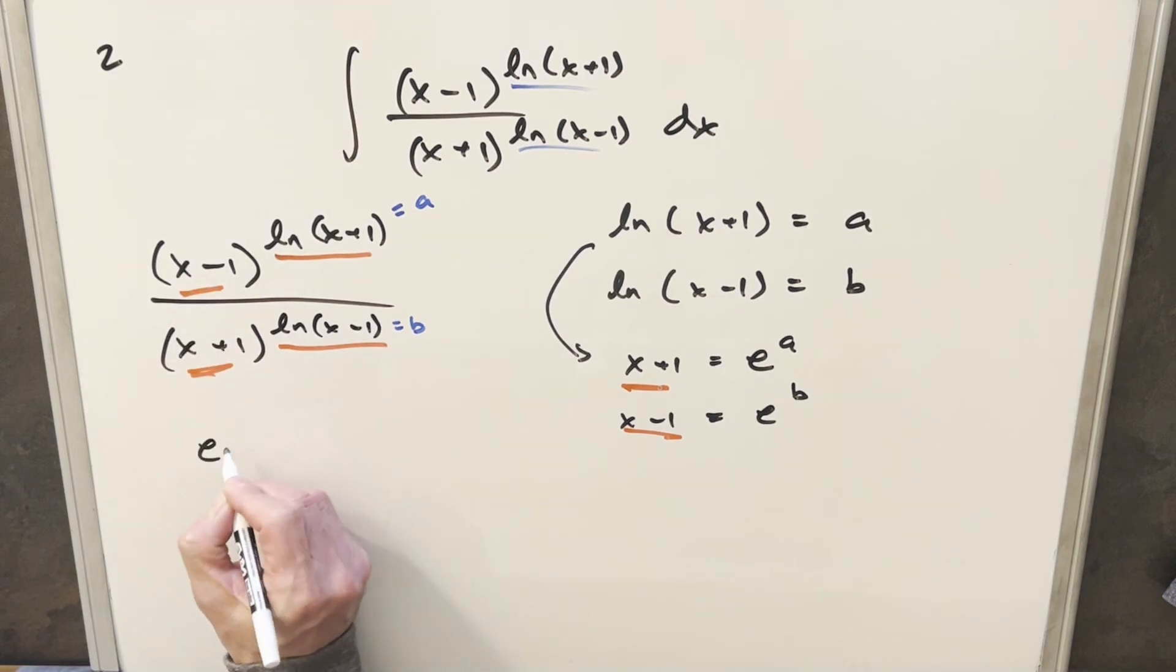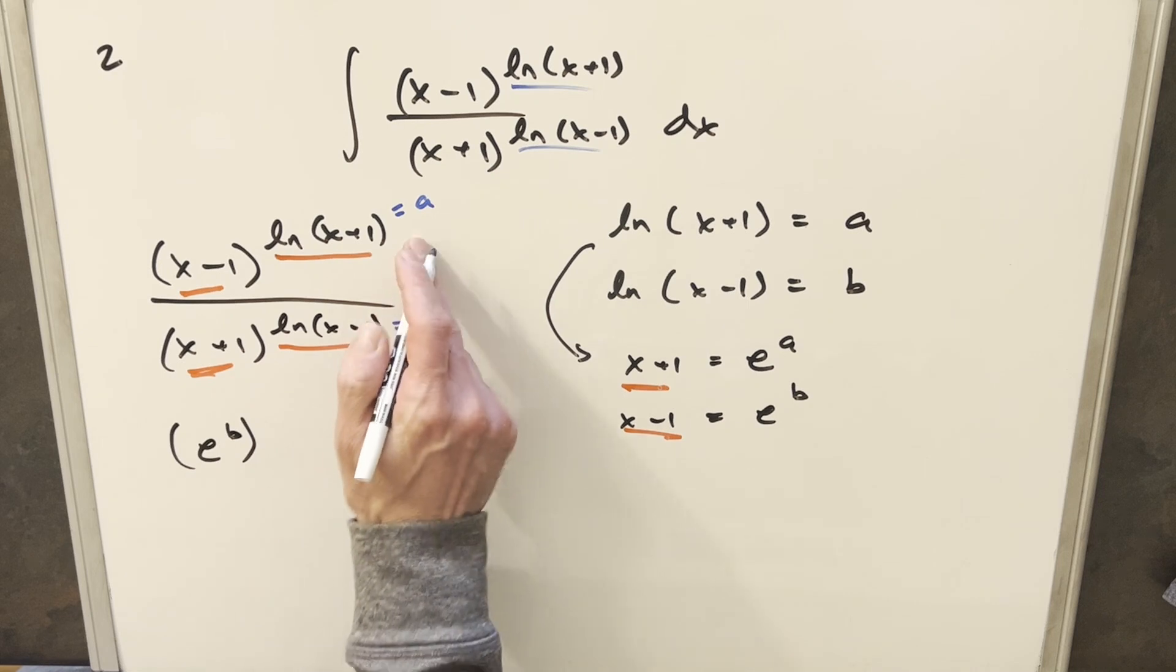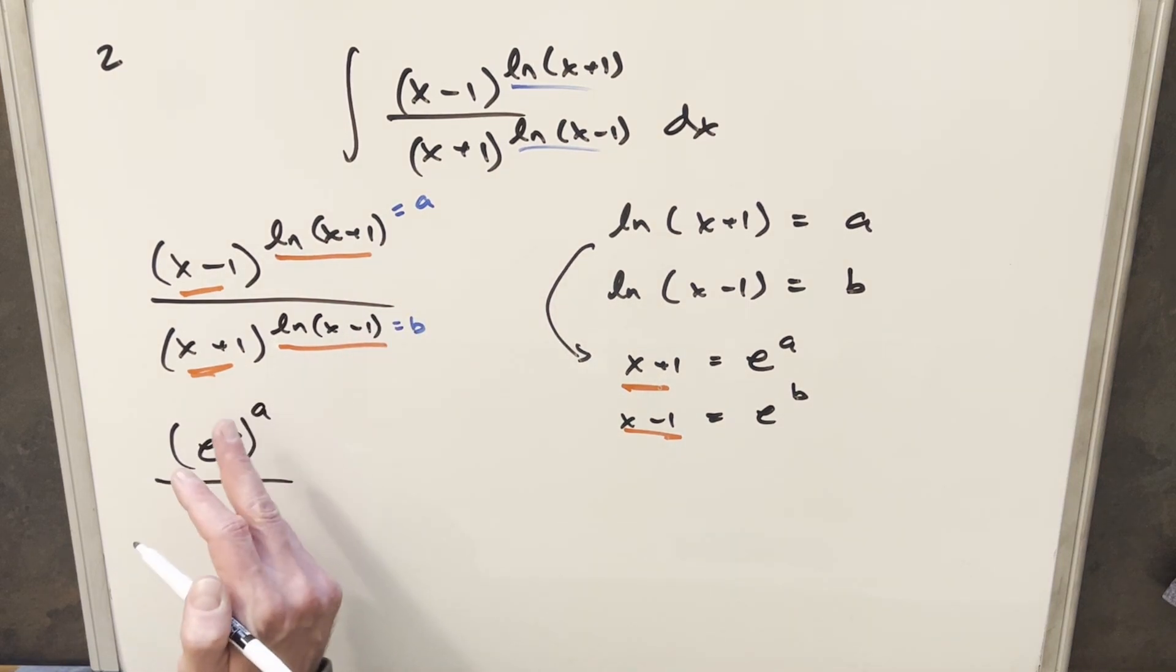So I can just totally rewrite this thing. For x-1, we're going to have e to the B, and then the exponent is just going to become A here. And then in the denominator, x+1 is going to become e to the A, and this exponent is just B.